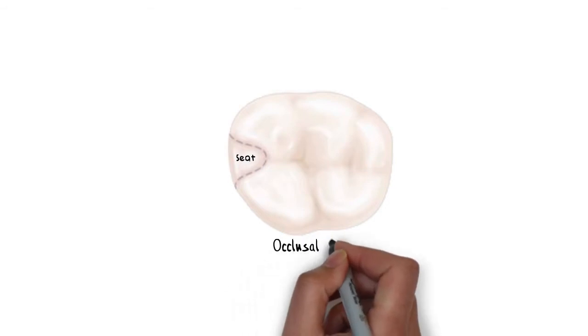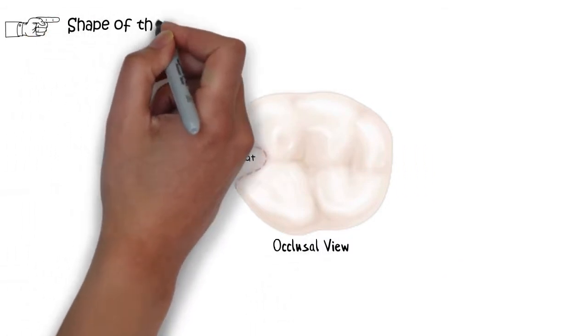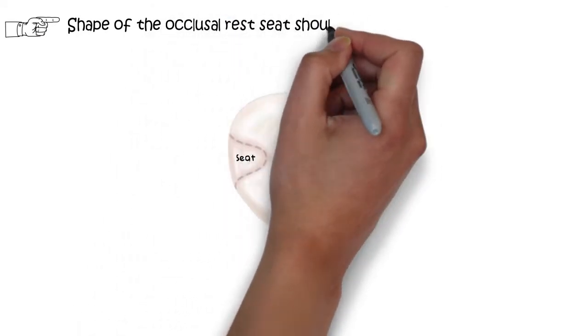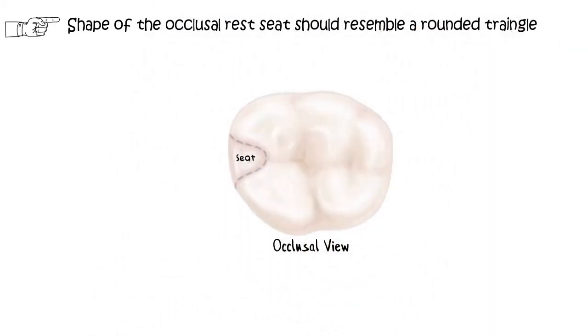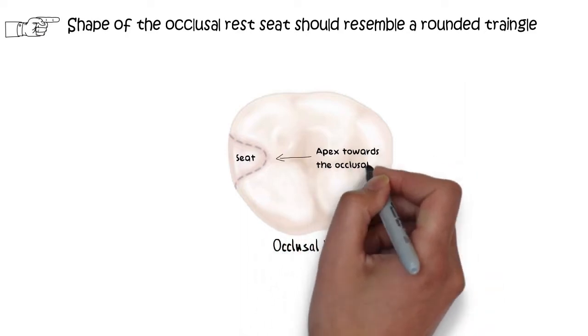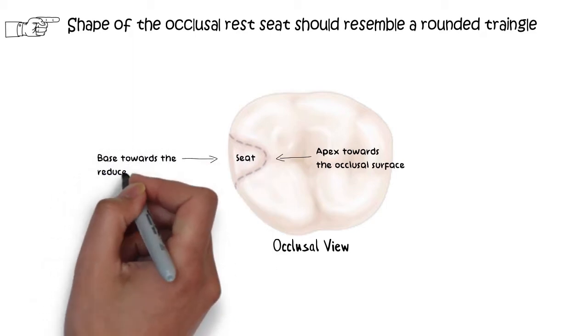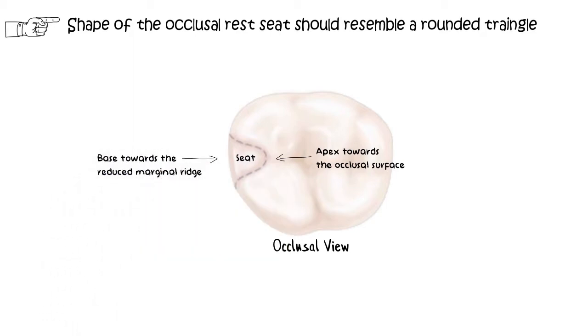When we view the rest seat from the occlusal surface, the basic shape of the occlusal rest seat should resemble a rounded triangle, with the apex of the triangle being towards the occlusal surface of the tooth, while the base will be placed away from the occlusal surface, meaning towards the reduced marginal ridge.